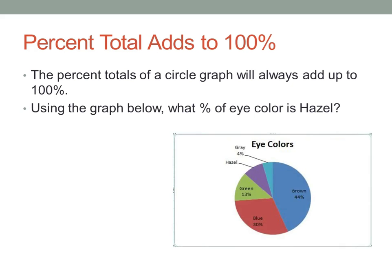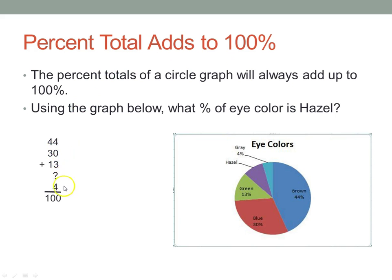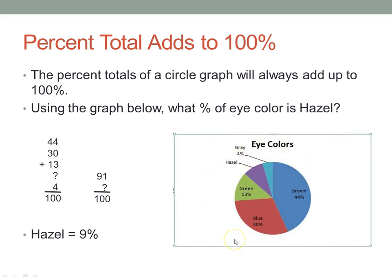Let's look at eye color: 44% brown, 30% blue, 13% green, 4% gray. What percent would be hazel? We can't just eyeball it — we want an exact percent. Since percents add up to 100, we add 44 + 30 + 13 + 4 = 91, so 91 plus something equals 100. That something is 9%, which is the percent of people with hazel eye color.